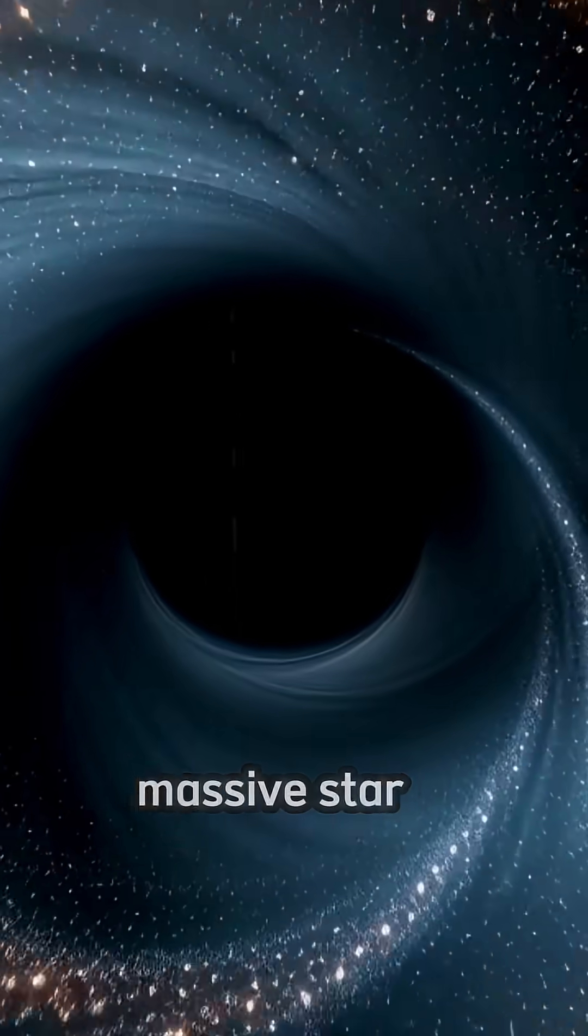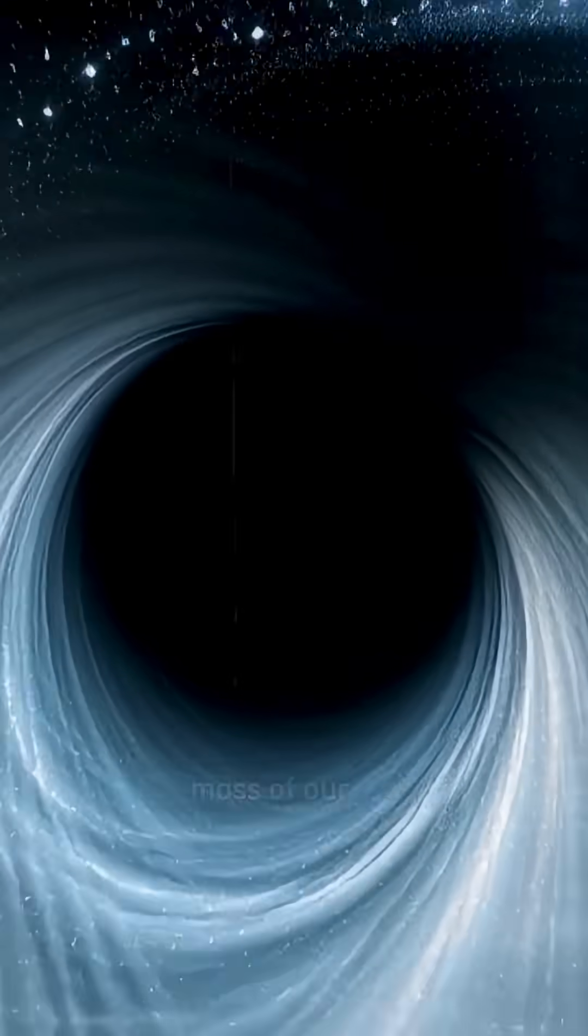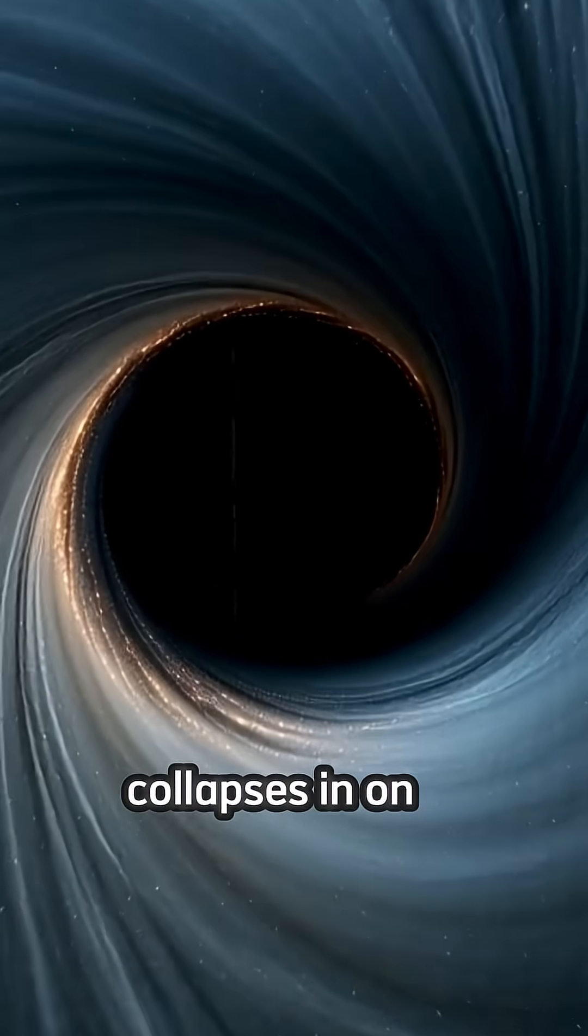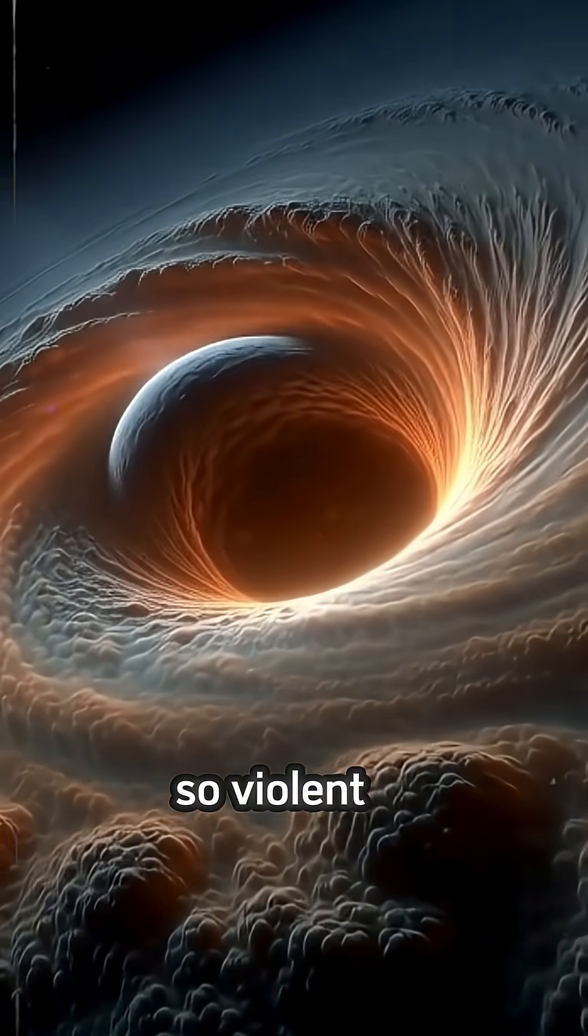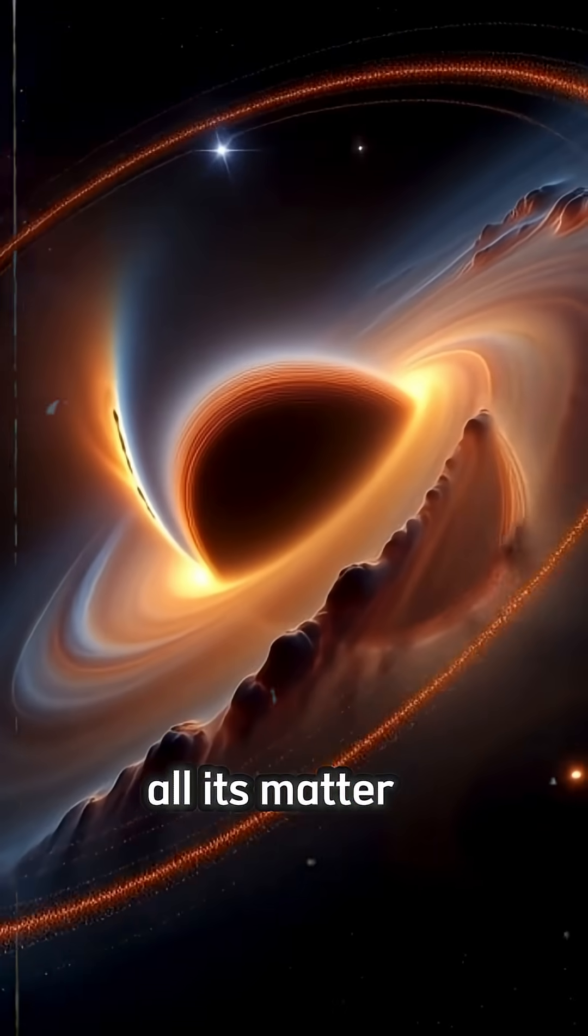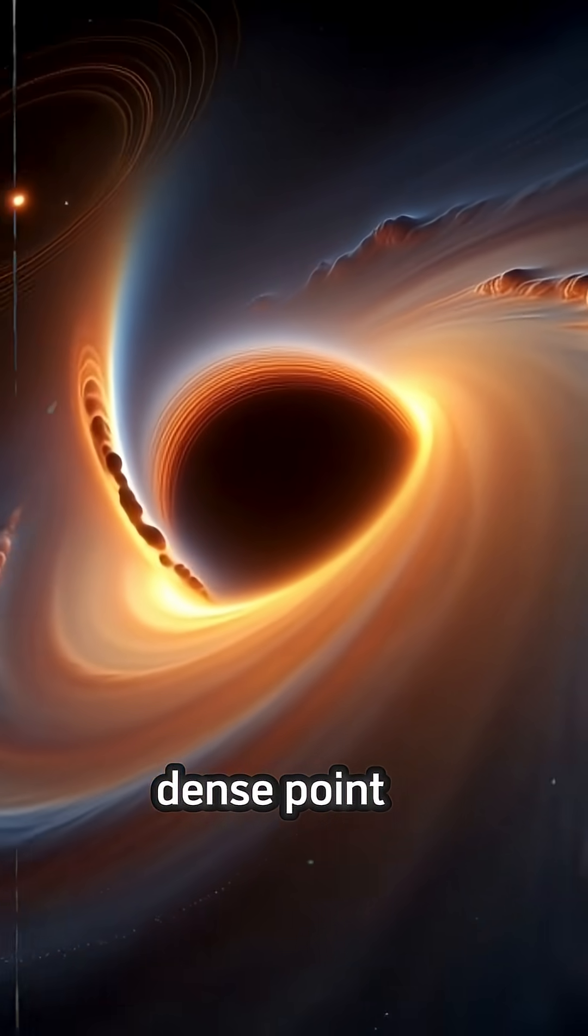A black hole forms when a massive star, many times the mass of our Sun, collapses in on itself after it runs out of fuel. This collapse is so complete and so violent that it crushes all its matter into an infinitely dense point called a singularity.